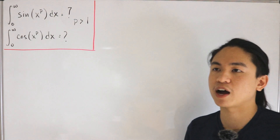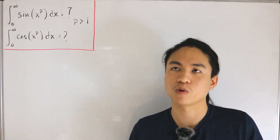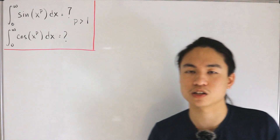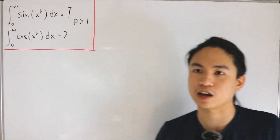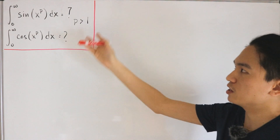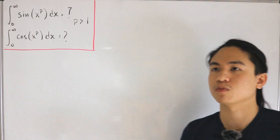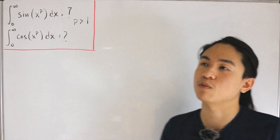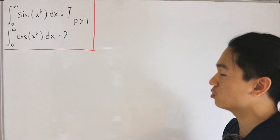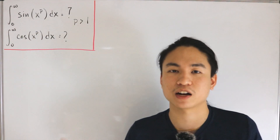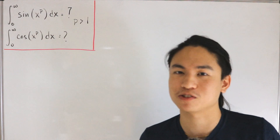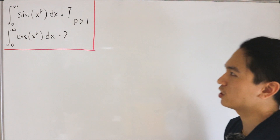Specifically, for p=2, both integrals equal √π/8, or equivalently one-half times √(π/2). The link is in the description. Computing this generalization will require special functions — specifically one property of the Laplace transform — and combining these tools will yield a nice closed form involving the gamma function.